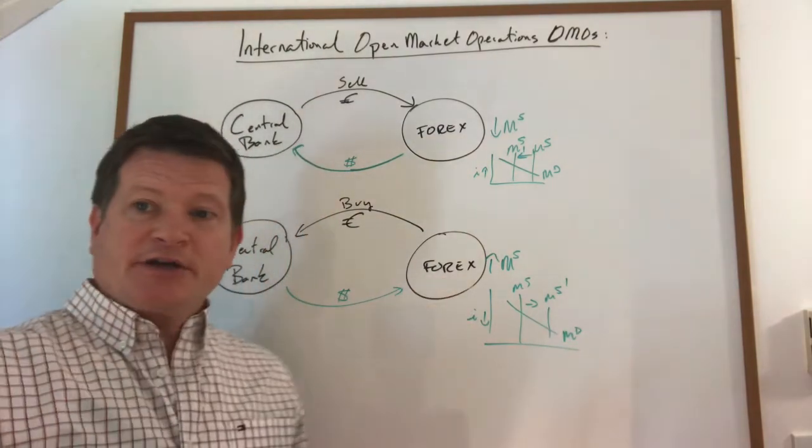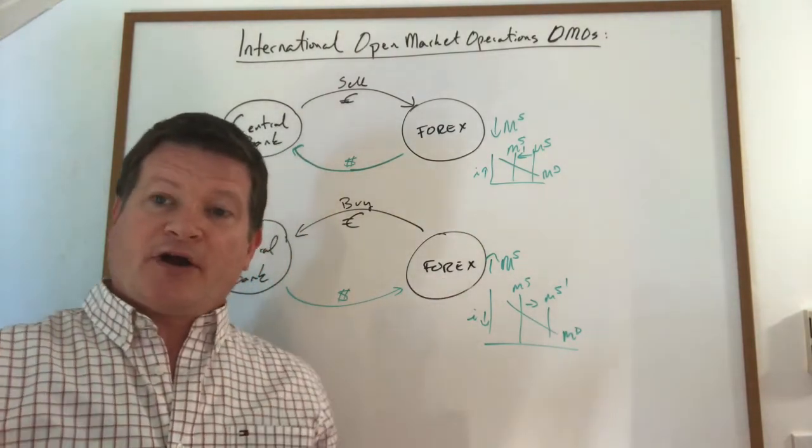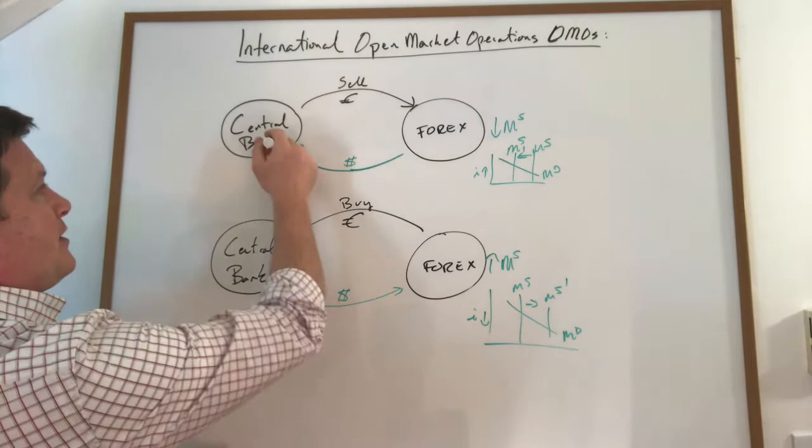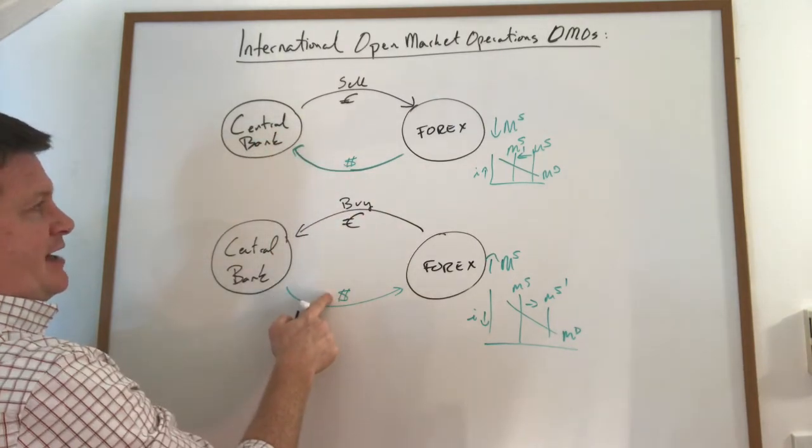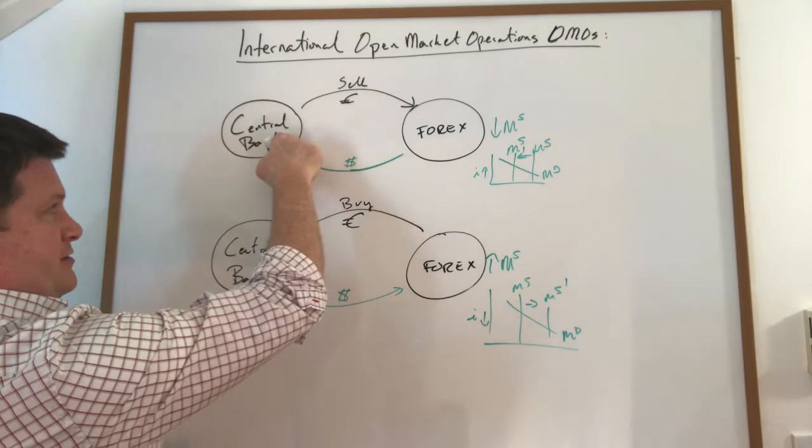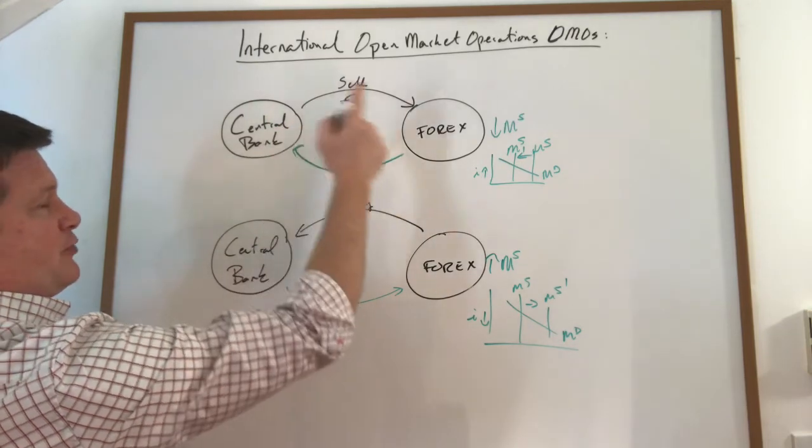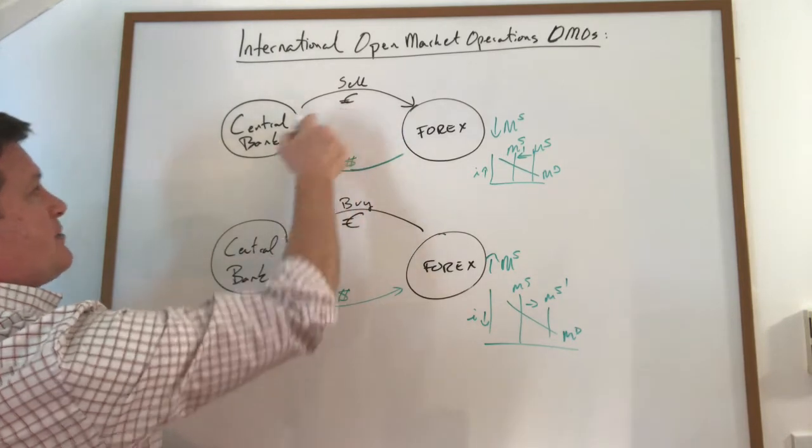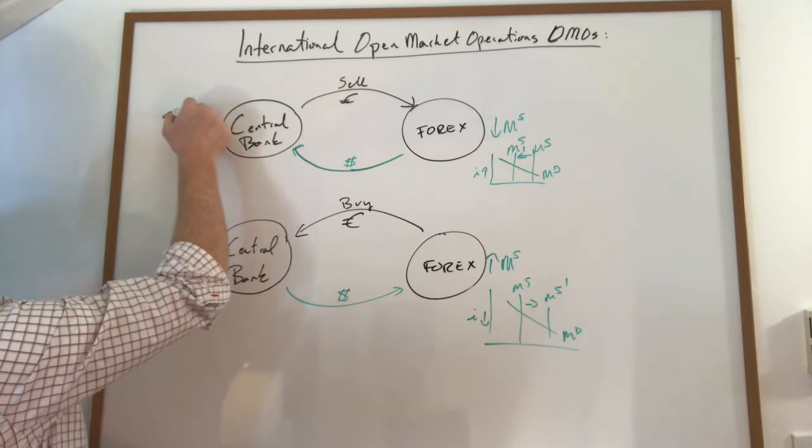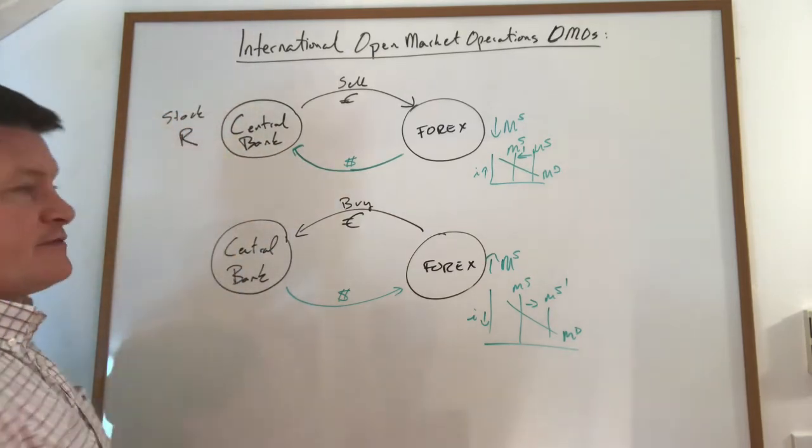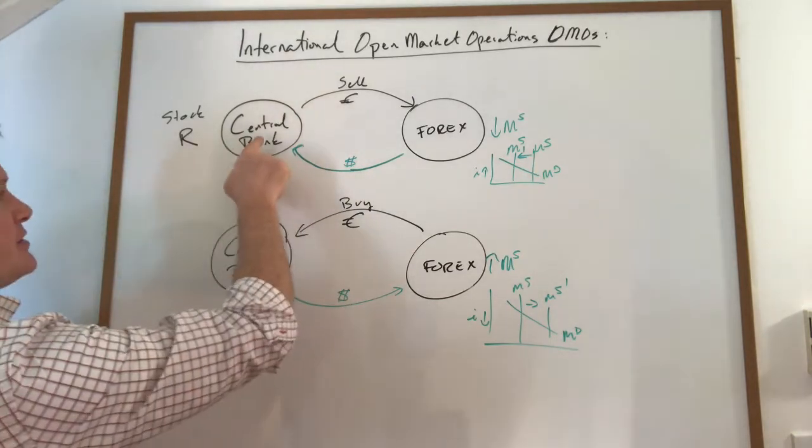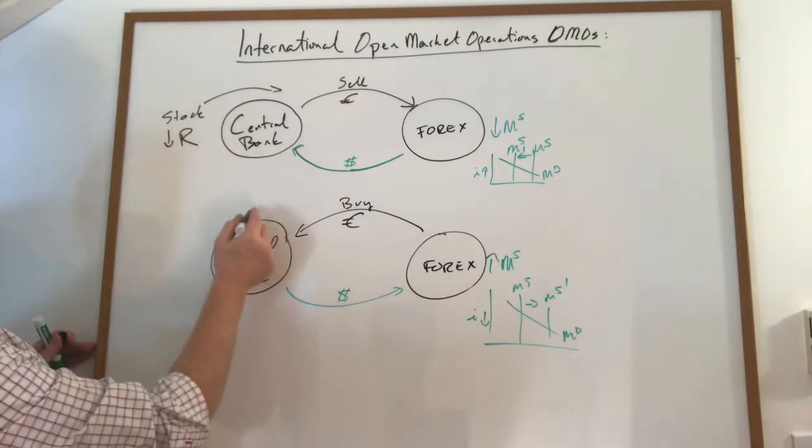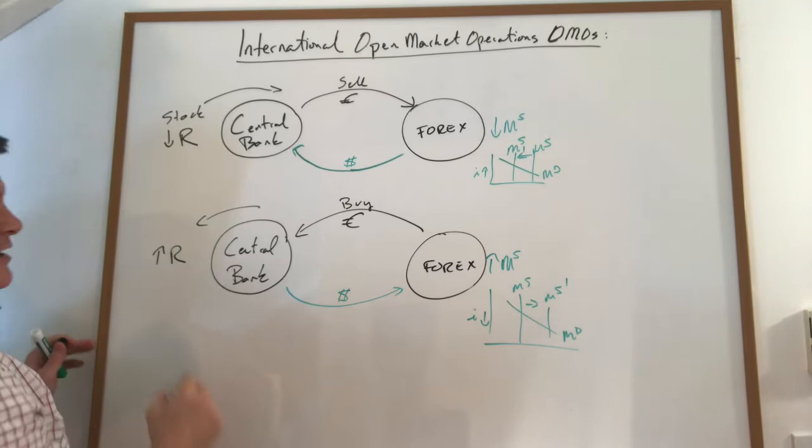Because the foreign exchange market is part of the global private market. The other thing we will start to keep track, the central bank can print as many dollars as it wants. But the domestic central bank cannot print foreign currency. The U.S. central bank cannot print euros. We can only print dollars. So we must have a stock of euros, and those would be called our reserves, our international reserves. And this action here, we sold some, so it decreased our stock. And here we bought some, so it increases our stock of reserves.